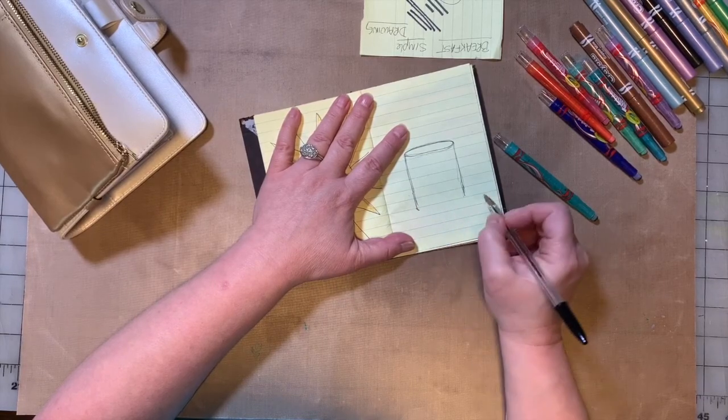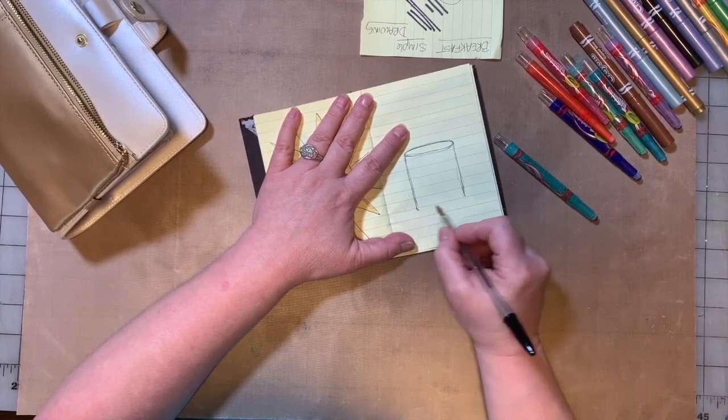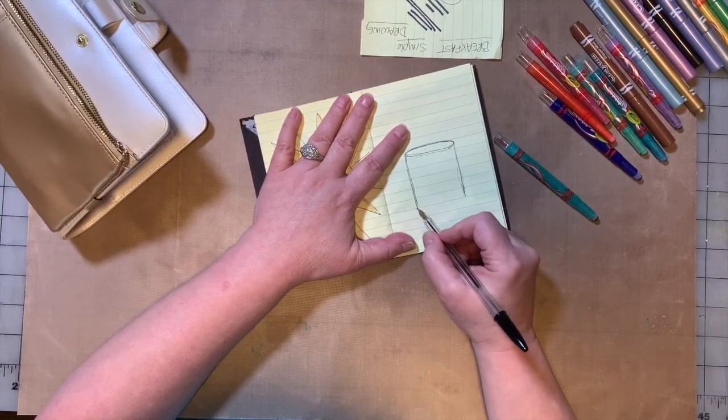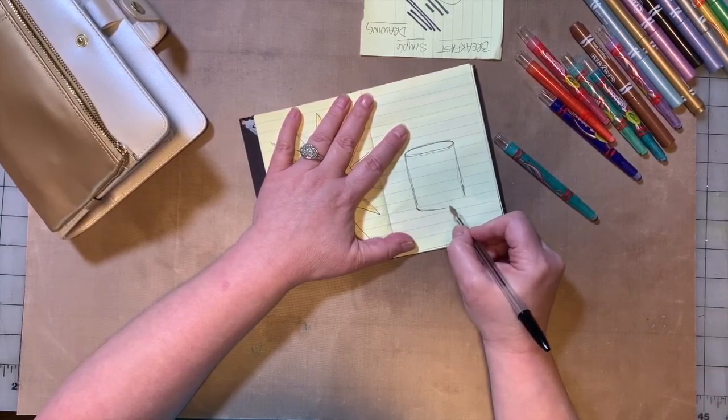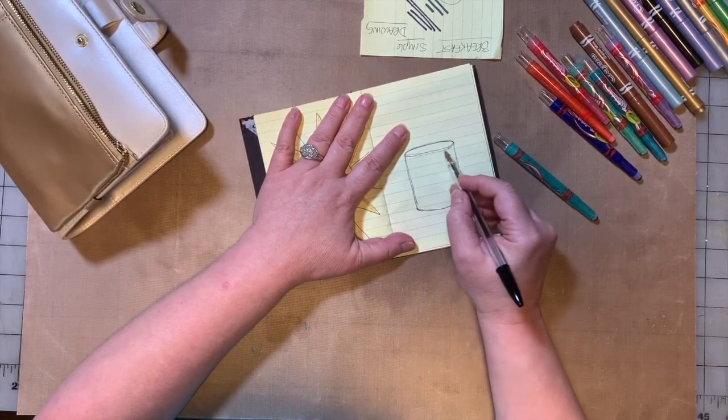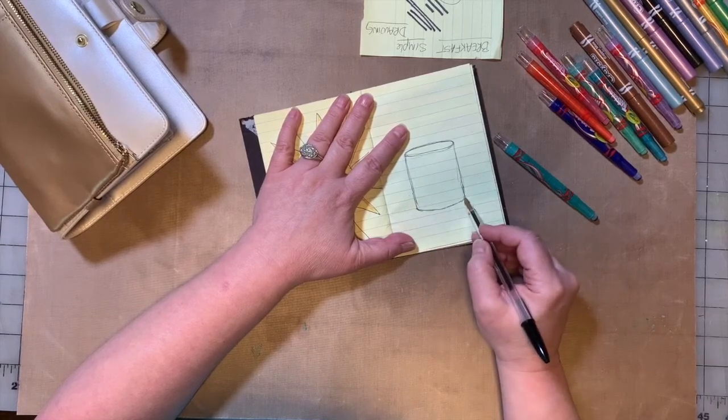So then once we have our straight lines down, they should both be ending at about the same place. We're going to start on one side and we're going to do a curved line connecting one side to the other that hopefully kind of matches this curve here down here.